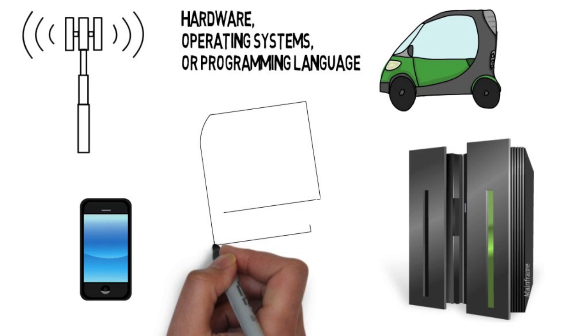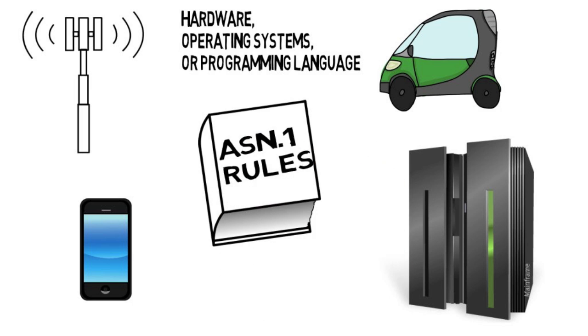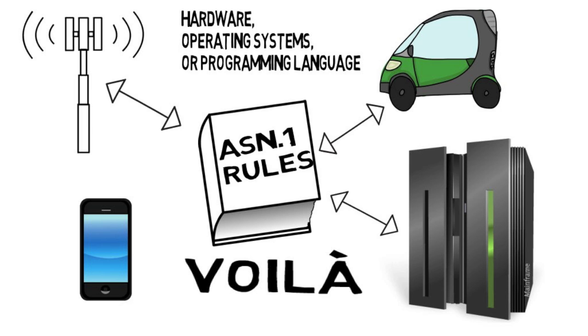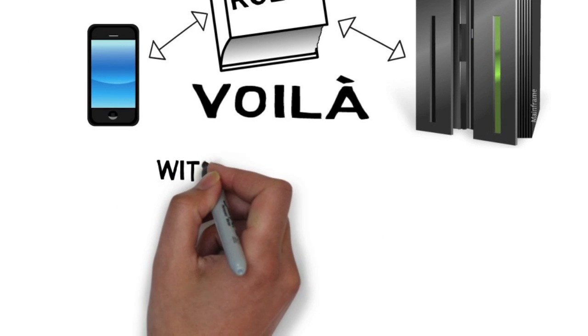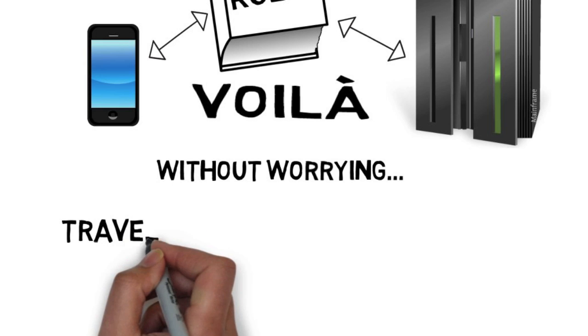Two or more communicating parties need only agree on how to express what they want to say. And voila! They can now understand each other without worrying about the details of exactly how messages get constructed or look like when traveling in the air or on the wire.